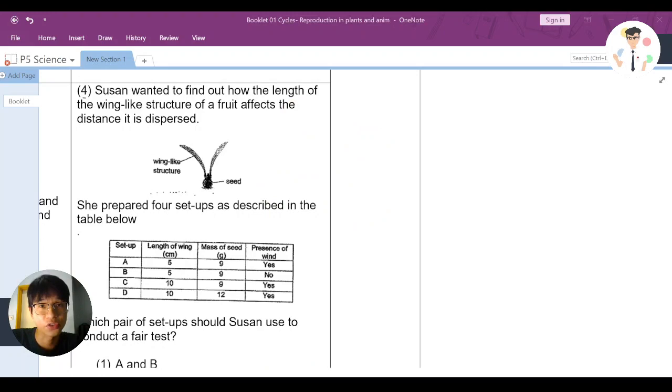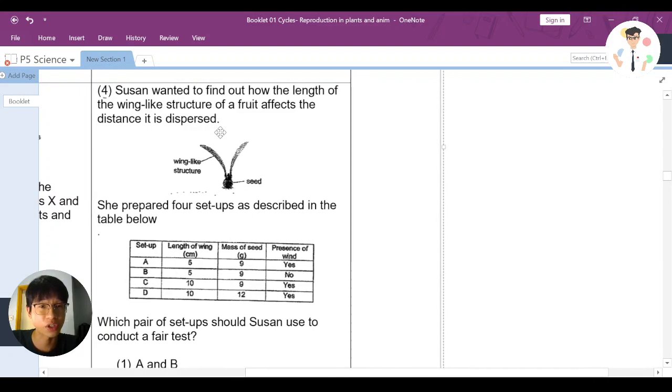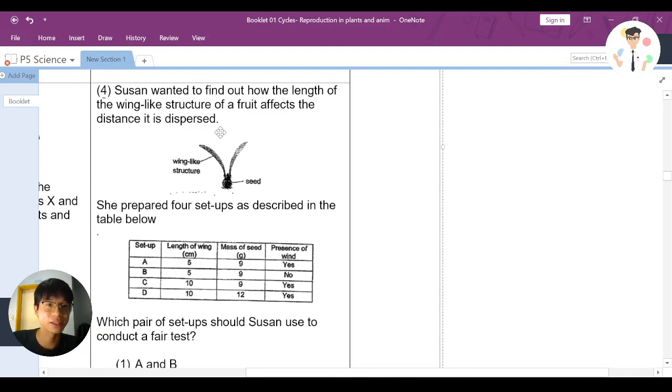Welcome back to the digital class and this is a discussion for our reproduction in plants and animals. Now we are focusing on this question here. So it says that student Susan wanted to find out how the length of the wing-light structure of the fruit affects the distance it is dispersed.